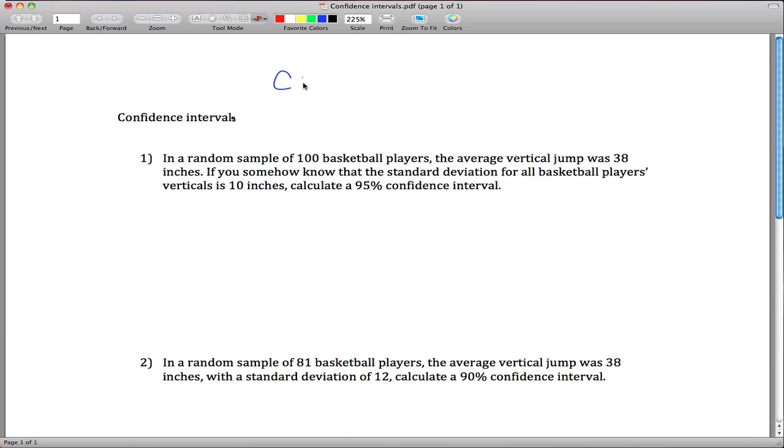The way you calculate a confidence interval for mu is you start with your best guess, I'm going to call that the point estimate, and it typically has something to do with the sample, whatever the sample average was. Then from that you want to add or subtract some number, we'll figure that out based on how confident we want to be, standard deviations.